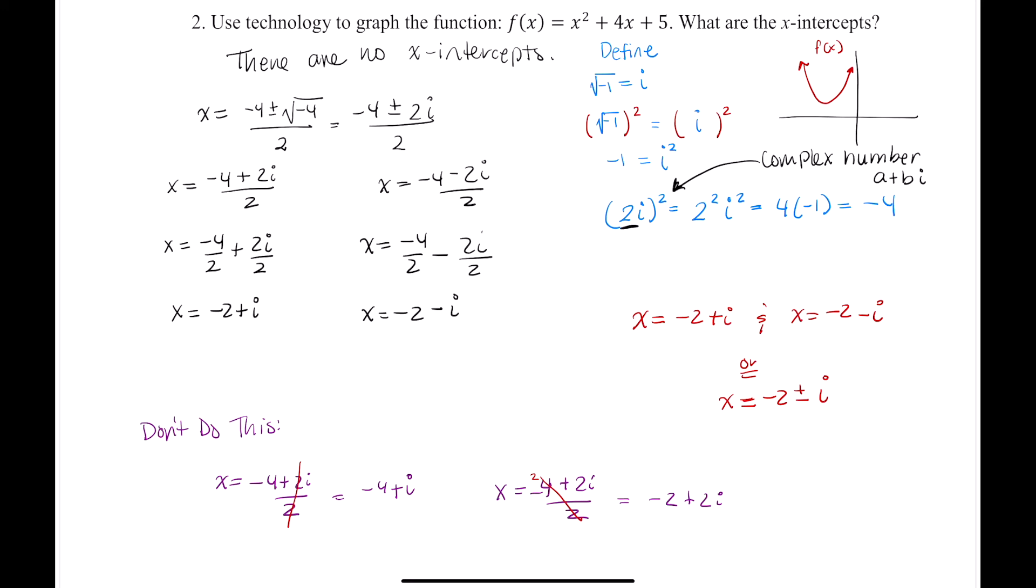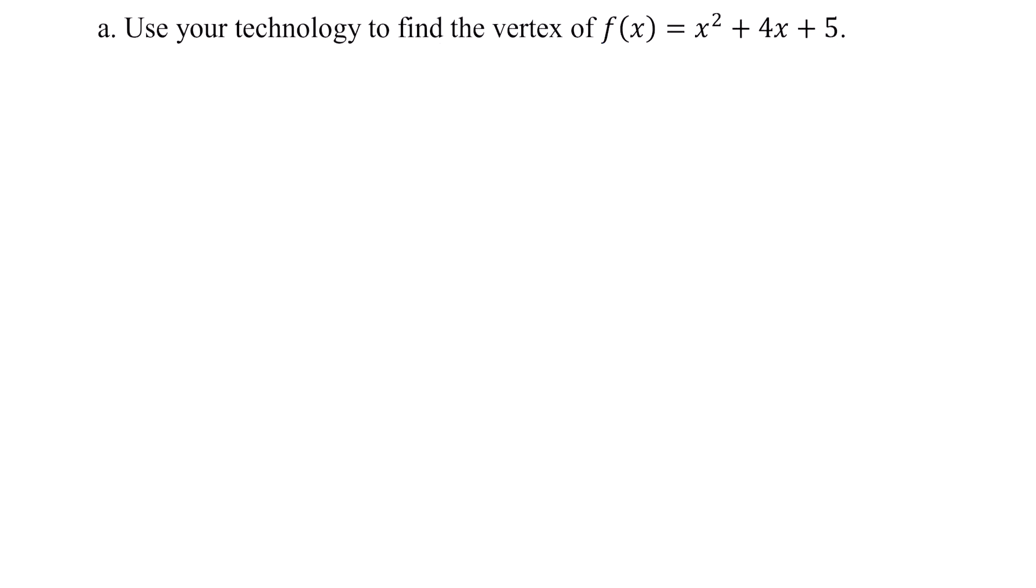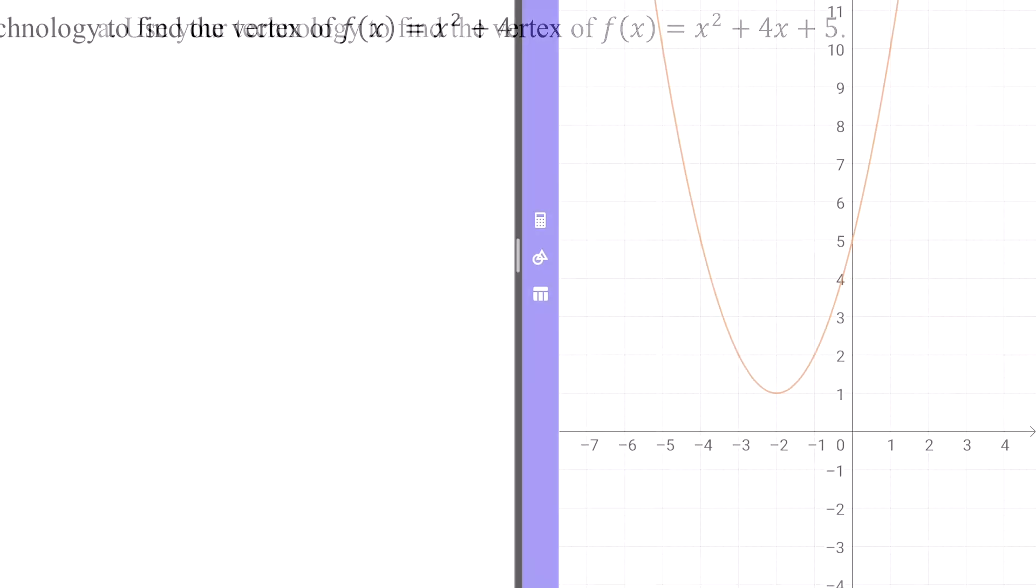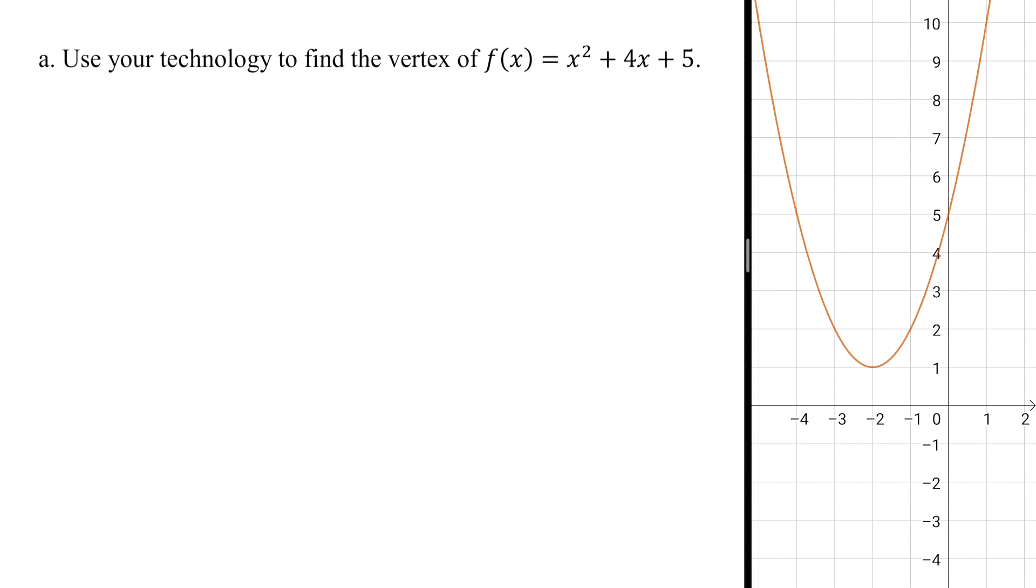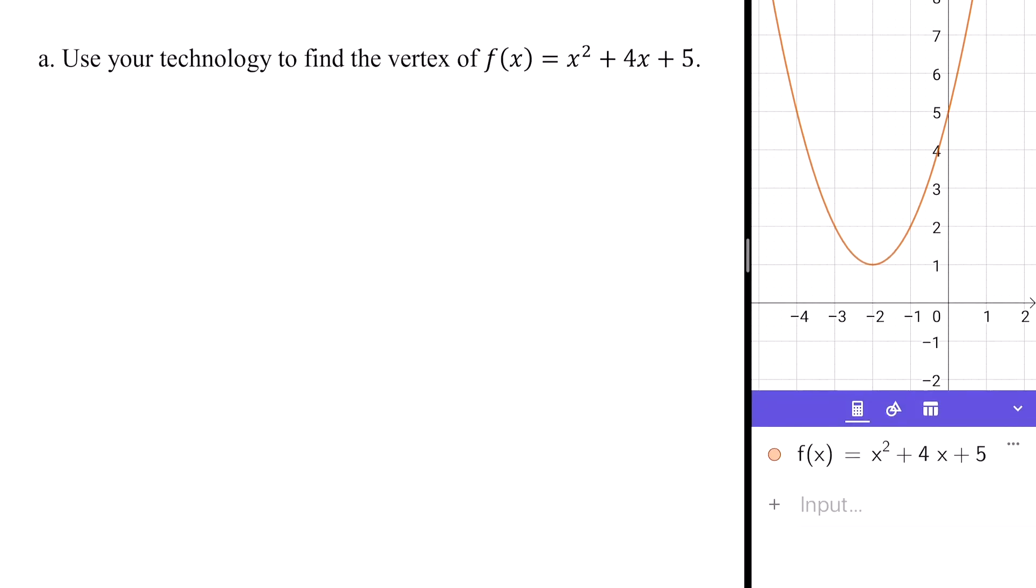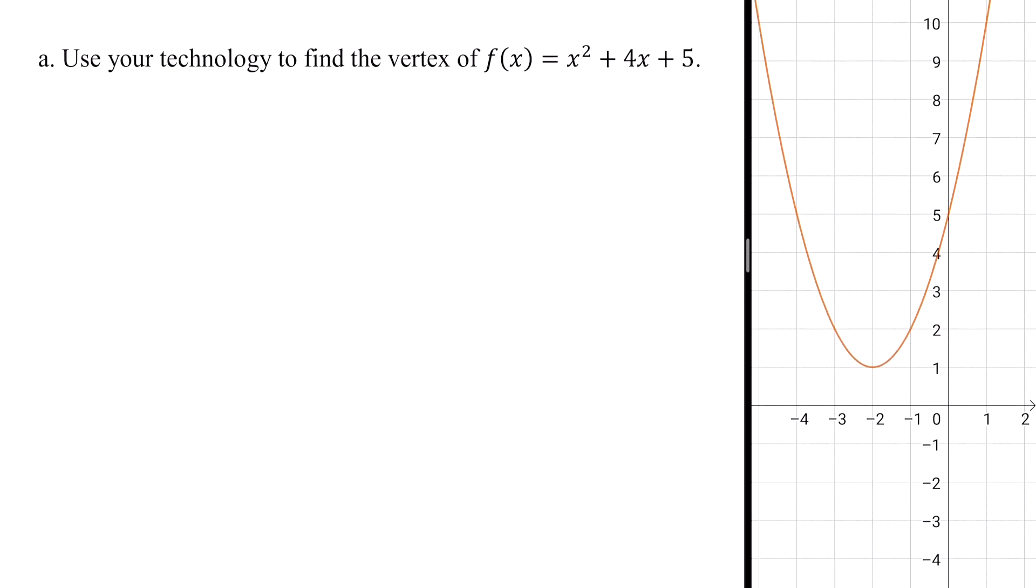Let's continue. Let's use technology to find the vertex of f of x, and that's the same f of x from the previous problem, since it's already graphed here anyways. And let's double check x squared plus 4x plus 5. And the vertex, if we tap, will just show up at the bottom. And the vertex is negative 2, 1.